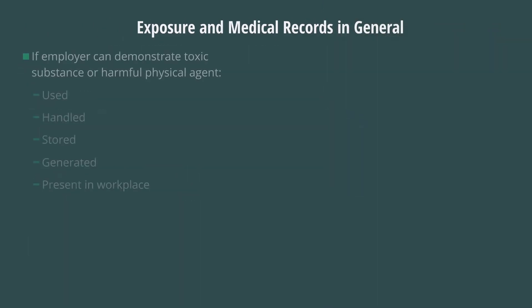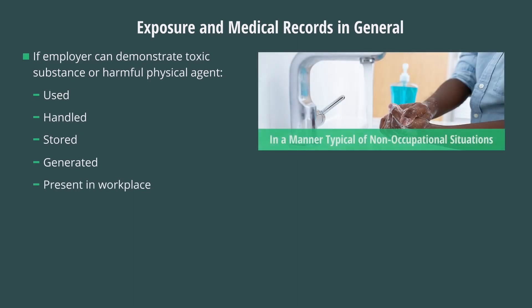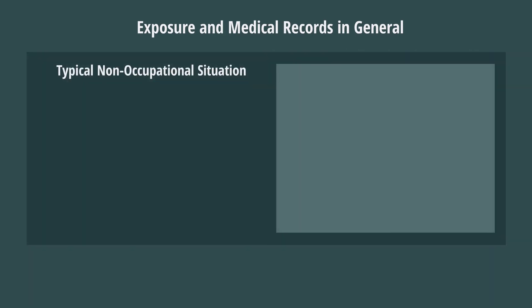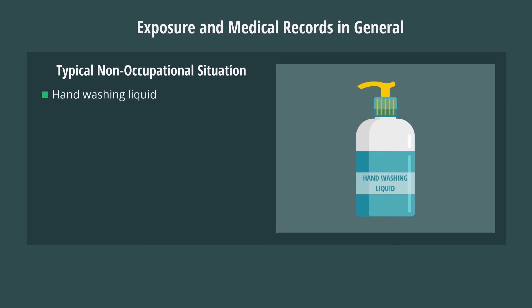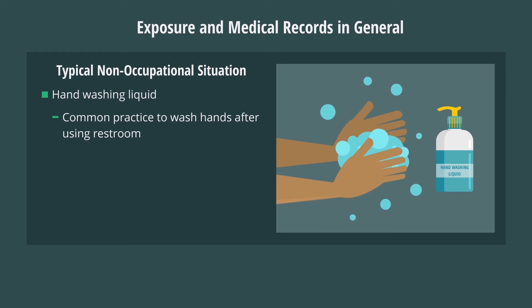Another interesting aspect of this standard is that any employer who can demonstrate that a toxic substance or harmful physical agent is or was used, handled, stored, generated, or present in the workplace in a manner typical of non-occupational situations, they would not be required to fulfill the regulatory retention obligations for those substances. One example of a chemical substance that would fall under this category is handwashing liquid used by employees after using the restroom, since it is a common practice to wash one's hands after using the restroom. This exposure would be typical of non-occupational situations.